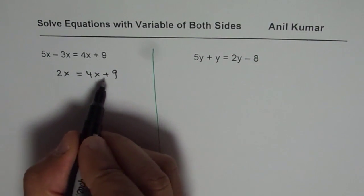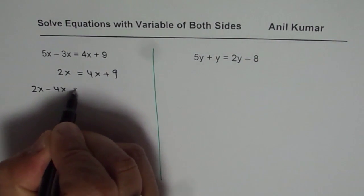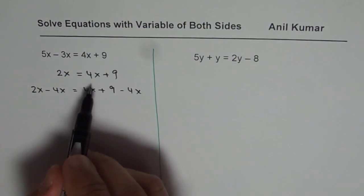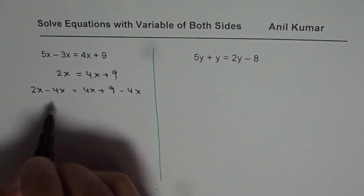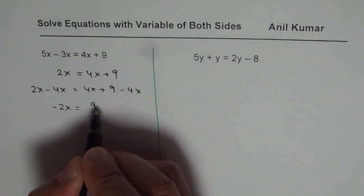Now we will take away 4x from both sides. We have 2x minus 4x equals 4x plus 9 minus 4x. Subtracting 4x from both sides will give us minus 2x on the left side and 9 on the right side.